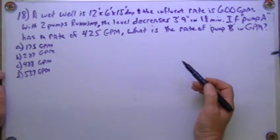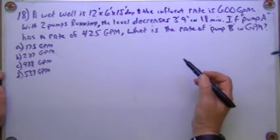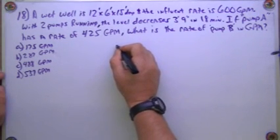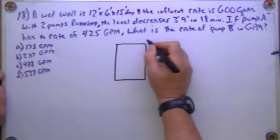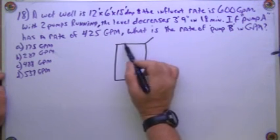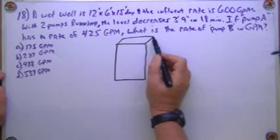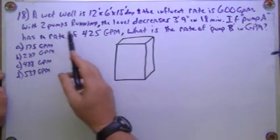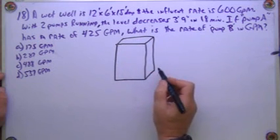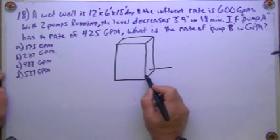We'll start by drawing this and then simplify a couple of things. So it's square. We've got pump A and pump B, so we've got two pumps coming out.